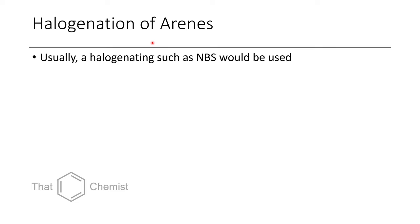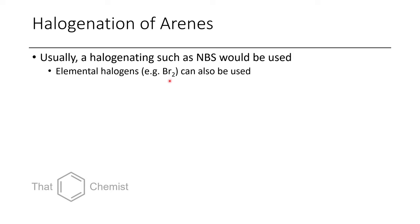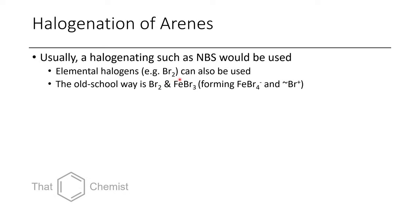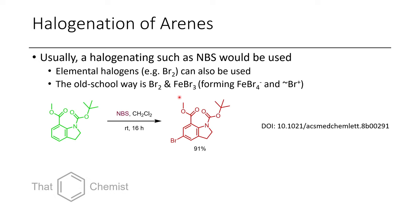Next, we'll talk about the halogenation of arenes. Most of the time in modern chemistry you'll see N-bromosuccinimide, N-chlorosuccinimide, and N-iodosuccinimide used. It's harder to install fluorines onto aromatic rings, but you can do so from diazoniums. For the most part, we're just going to be talking about aryl bromides, chlorides, and iodides. It's also possible to use elemental bromine, and most textbooks show bromine used in conjunction with a Lewis acid catalyst such as iron tribromide or aluminum trichloride.